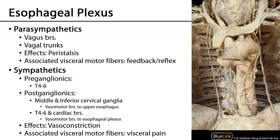There are inputs both parasympathetic and sympathetic to this autonomic plexus. The parasympathetics are going to be the dominant fiber within the plexus — these are the vagus nerves. Here we see the left vagus nerve become the vagal trunks, with an anterior and a posterior vagal trunk.